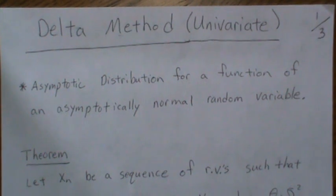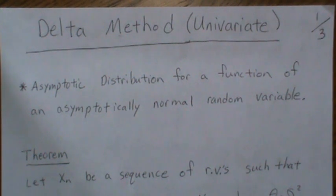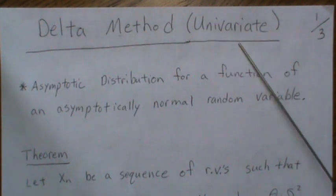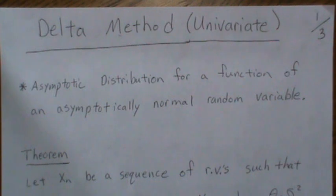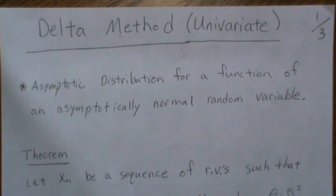In this video we're going to look at the Delta method, and more specifically the univariate Delta method. What it does is it essentially gives us an asymptotic distribution for a function of an asymptotically normal random variable.